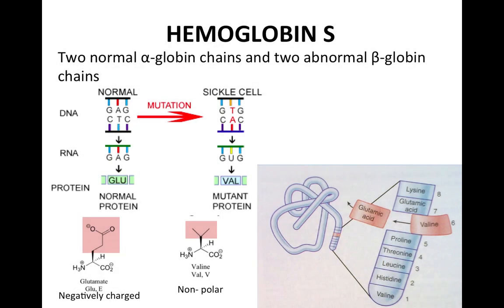Sickle cell hemoglobin is a mutant version of the normal hemoglobin. In normal hemoglobin, you can see at the sixth amino acid the GAG codon, which codes for glutamate. Glutamate is a negatively charged amino acid, whereas a change of A to T in the sixth codon will change the amino acid to valine, which is a non-polar or near neutral — less negatively charged — amino acid.